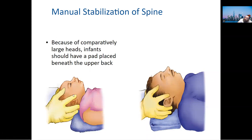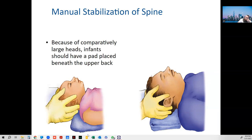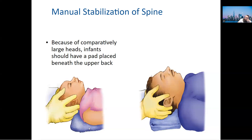Children, especially infants, have big heads — disproportionate to their bodies. Because of this, to put them in the neutral position you may want to place a towel or folded sheet between the shoulders or on the upper back. This allows the head to fall into the neutral position.